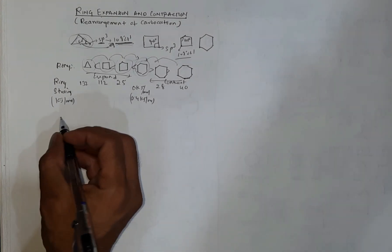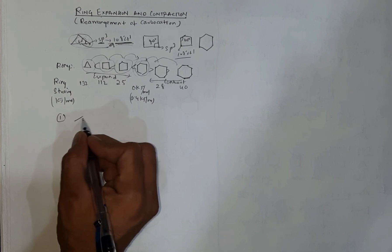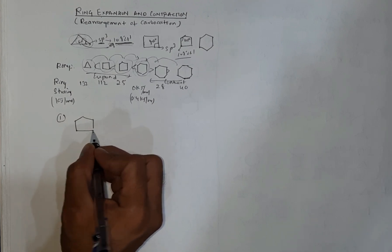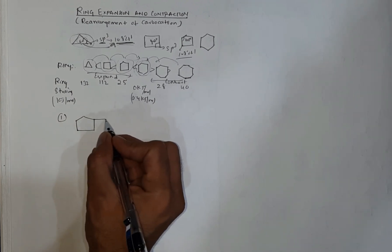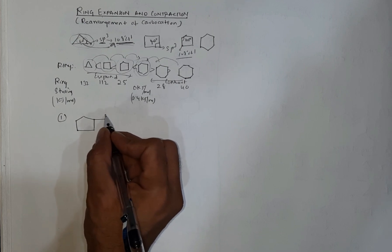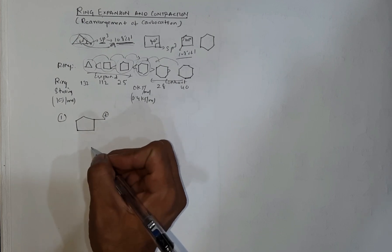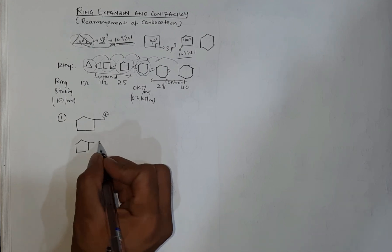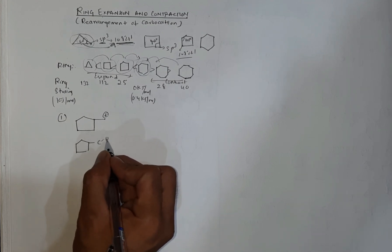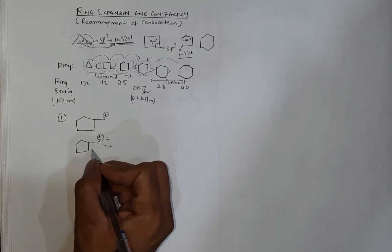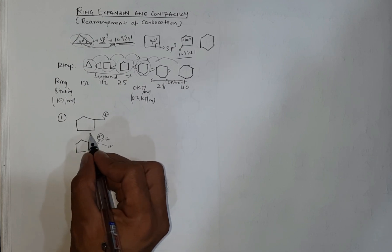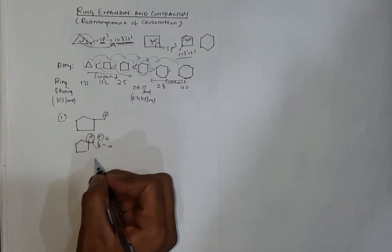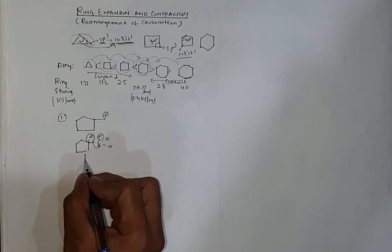Let us take an example with a cyclopentane carbocation. Here there is a positive charge on the ring: a cyclopentane with a CH2 group and a positive charge, with a hydrogen atom adjacent. If you migrate this hydrogen atom via a hydride shift, it results in the formation of a new structure.